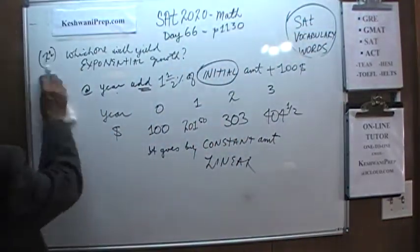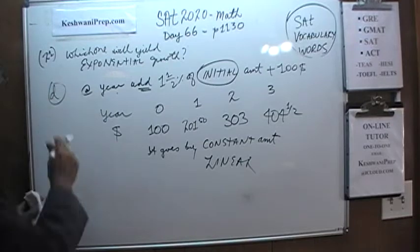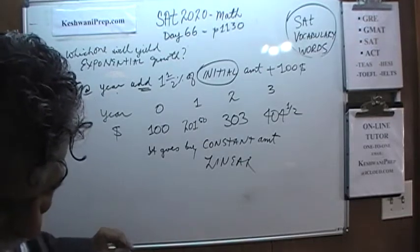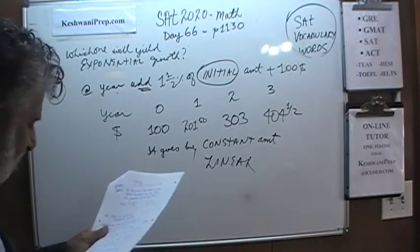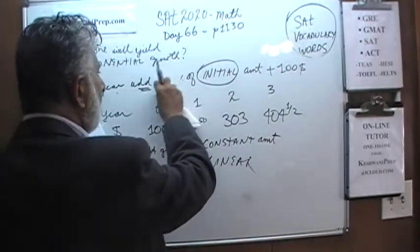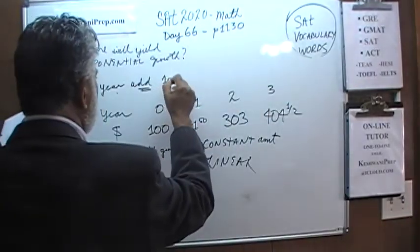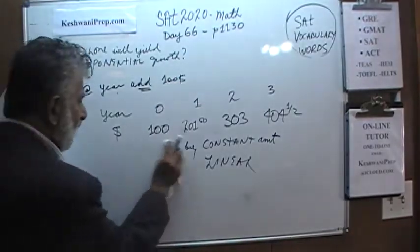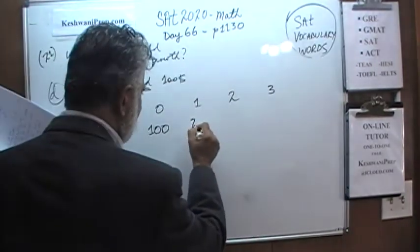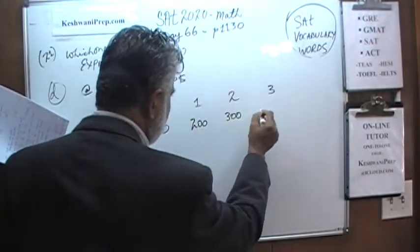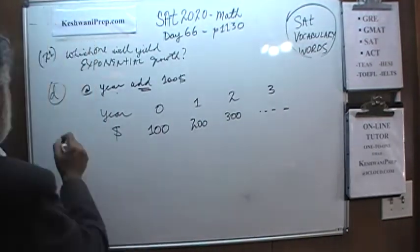Let's look at answer choice D. Answer choice D says: each year we simply add $100. If you start with $100, at the end of year 1 it becomes $200, then $300, and so on — it goes up by a constant amount. This is also linear. The correct answer, of course, is C.